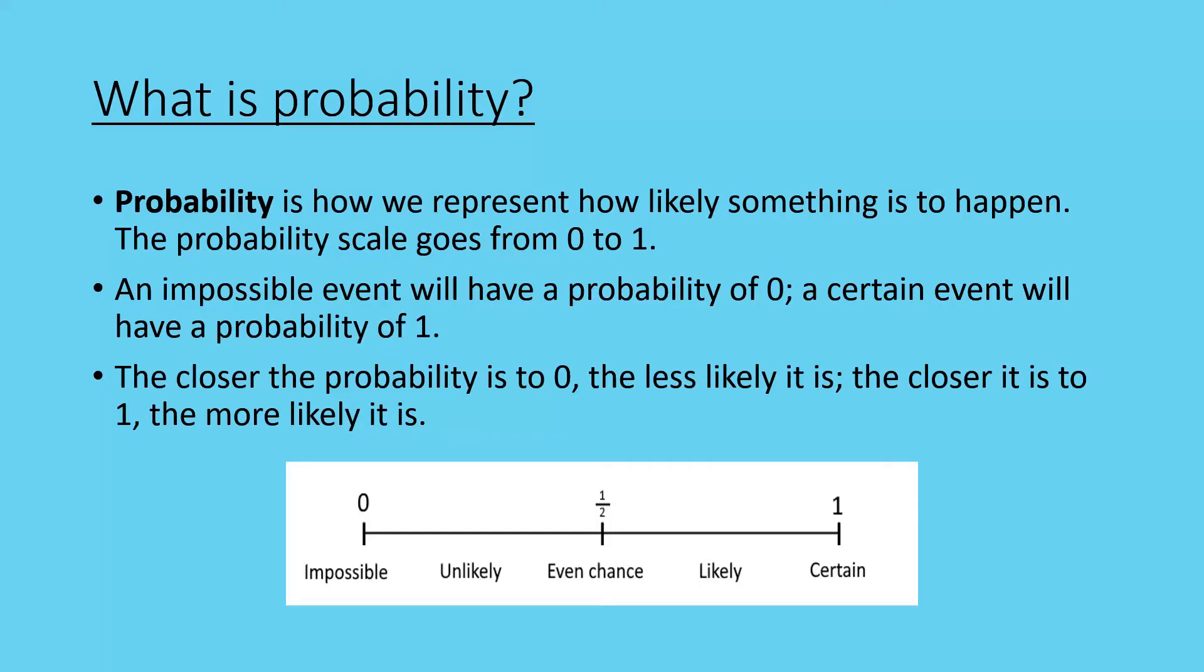So you'll see that when there is a 50% chance or a half, then you're going to have an even chance. Anywhere below a half is unlikely. Anywhere above a half is likely.